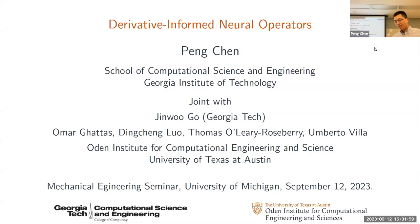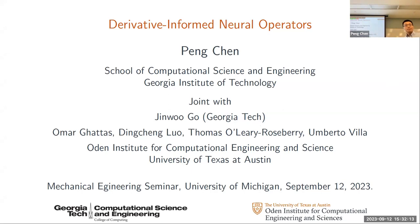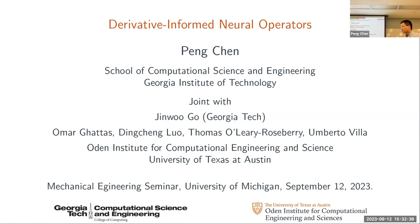Welcome to the mechanical engineering department seminar. It is my pleasure to introduce Dr. Peng Chang, currently a tenure-track assistant professor in the School of Computational Science and Engineering at Georgia Tech. Previously, he was a research scientist at the Oden Institute for Computational Engineering and Sciences at the University of Texas at Austin. Before joining UT Austin, he spent a year as a lecturer and postdoc at ETH Zurich from 2014 to 2015, and obtained his PhD in Computational Mathematics from EPFL in 2014.